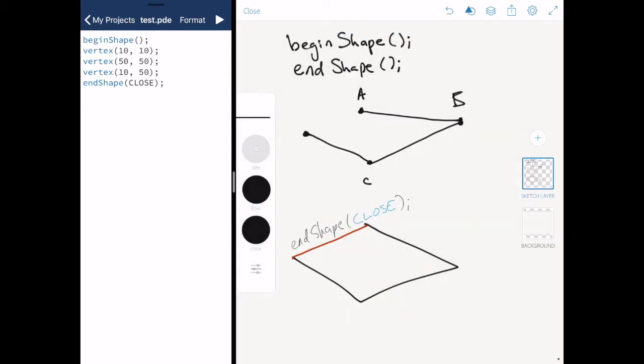But how do we define the points? As we see on the Processing sketch on the other side of the window, we have several points, each of which has a vertex or a corner.